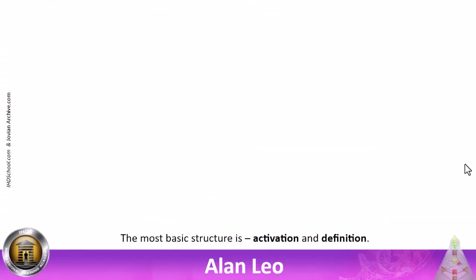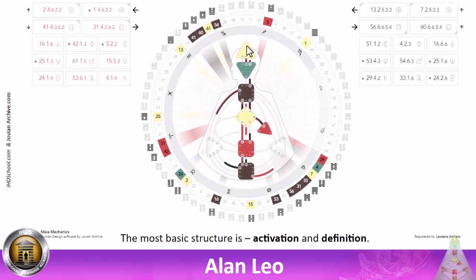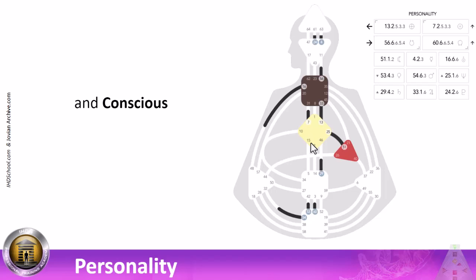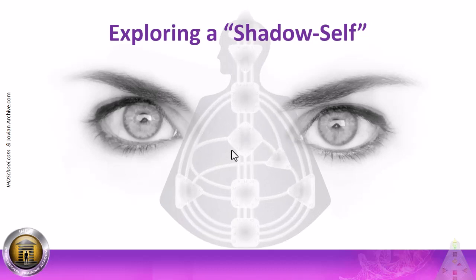When we look at any chart, really, the most basic structure is about activation and definition. The next basic structure is going to be about what is unconscious, the design. The design is our genetic body imprint, our physical imprint, this one precious body with its one precious life. And then we have the duality of the conscious activations, the personality construct.